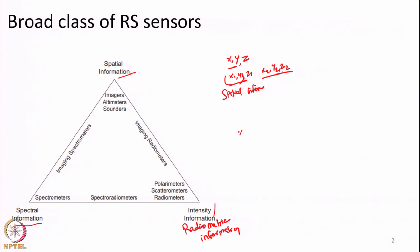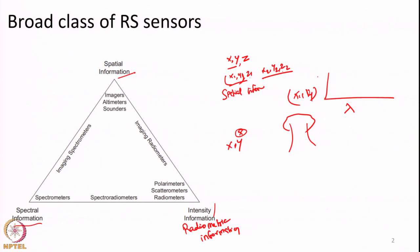On the other hand, at every ground point, if I collect how the incoming energy or how the reflected energy varies with respect to wavelength — say there may be vegetation at a given ground point x, y, there may be like a tree standing — what I am interested in collecting is at the point x, y, what is the spectral reflectance curve? This will vary from 0 to 1. If I collect such information, I am collecting spectral information.